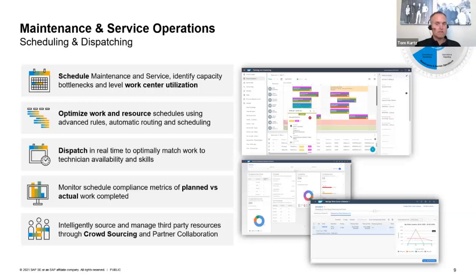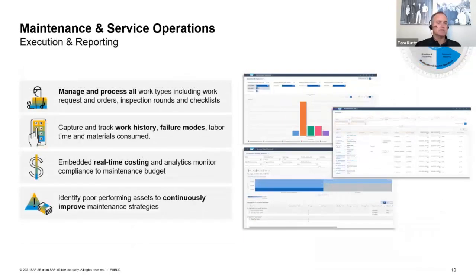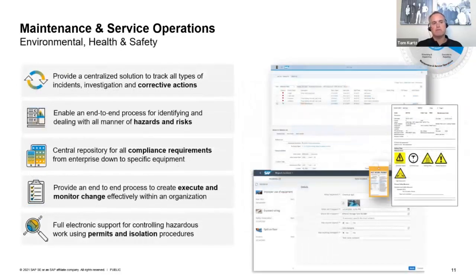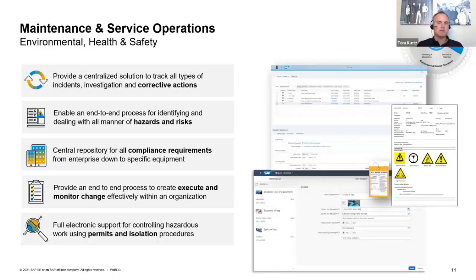Continuing with execution and reporting: how do I execute on that work order? Do I need mobility systems so that technicians can execute effectively? How do I report on it, learn from it, and proactively make changes based on analysis? The last touch point is environmental health and safety — keeping workers safe throughout this process. As we execute throughout this lifecycle, we want to comply with central requirements, identify and manage hazards and risks, and take corrective actions.